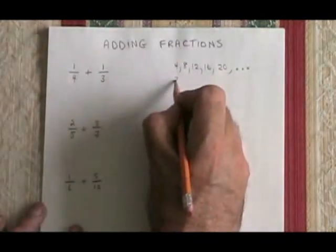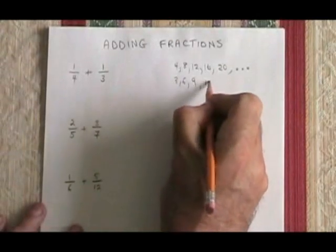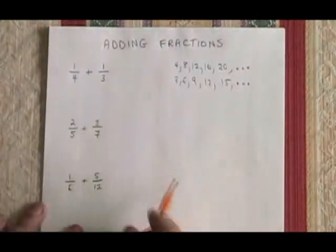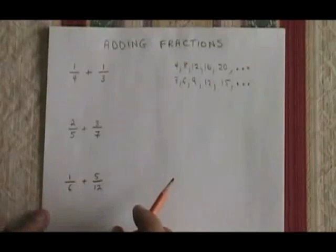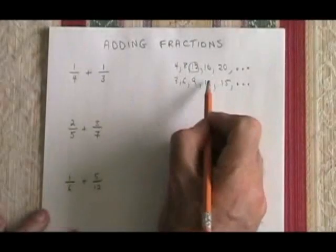3's multiples are 3, 6, 9, 12, 15, and it keeps going. I simply look for the lowest number that's on both lists, and the one I see is 12.